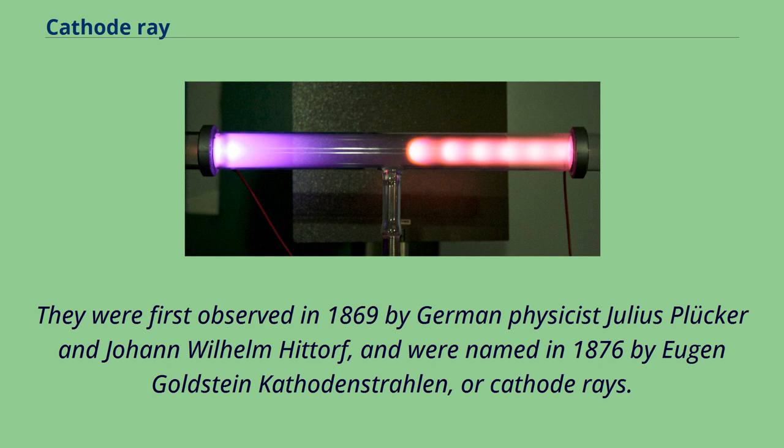They were first observed in 1869 by German physicists Julius Plucker and Johann Wilhelm Hitterf, and were named in 1876 by Eugene Goldstein cathode-enstrahlen, or cathode rays.